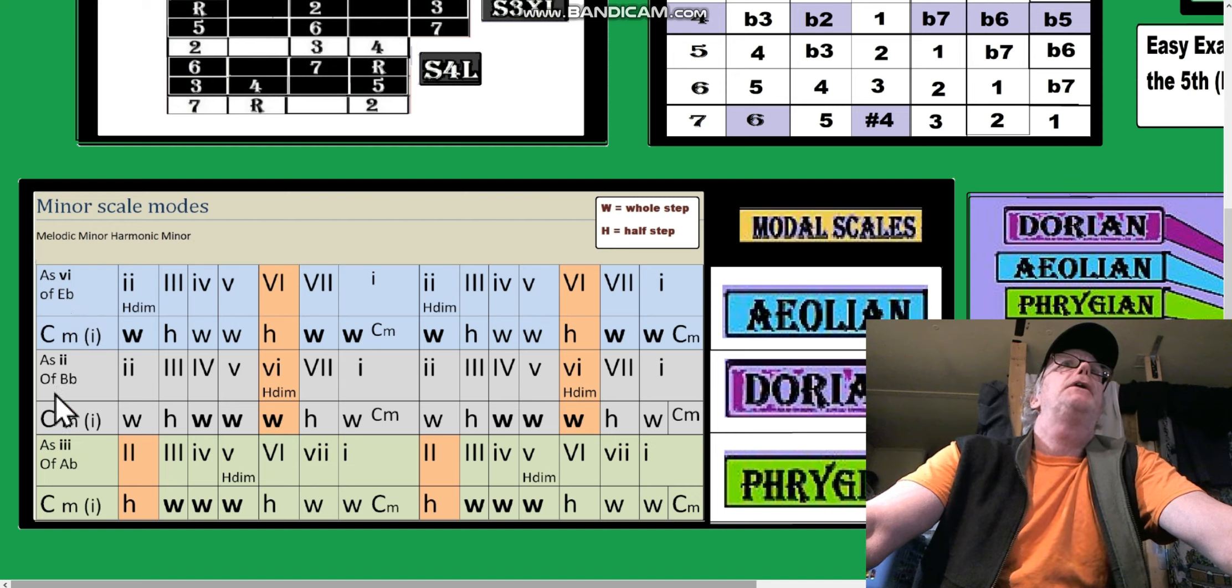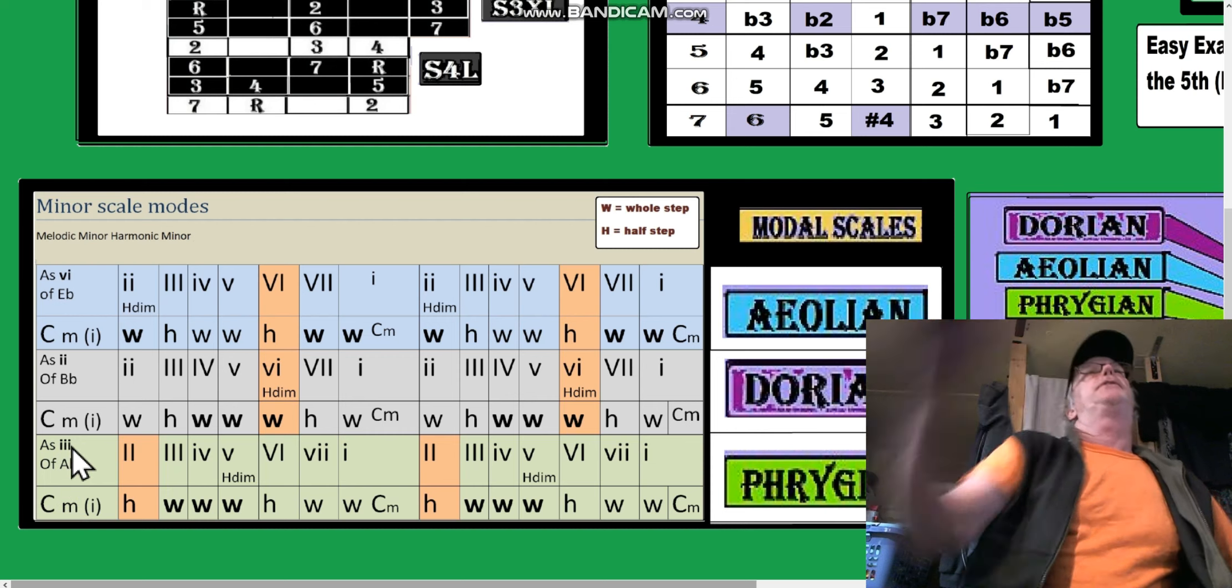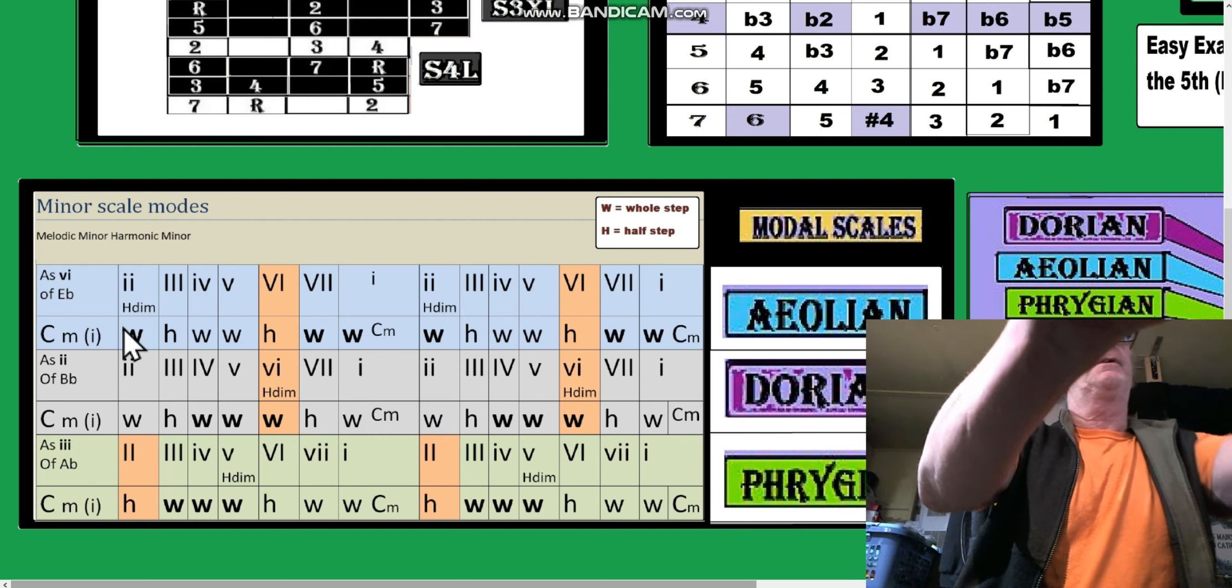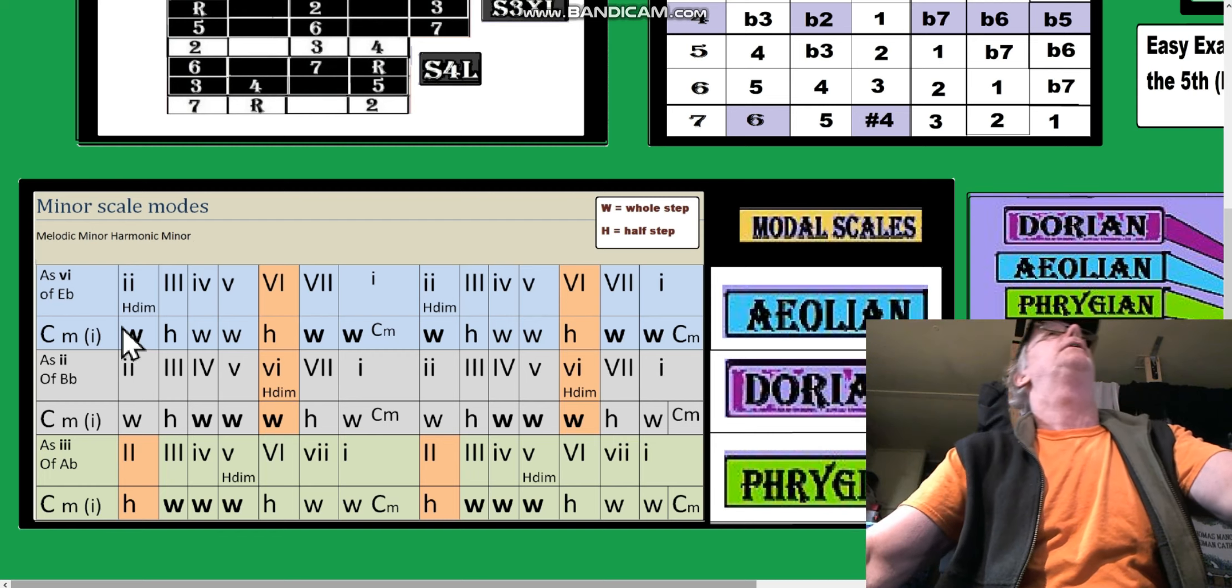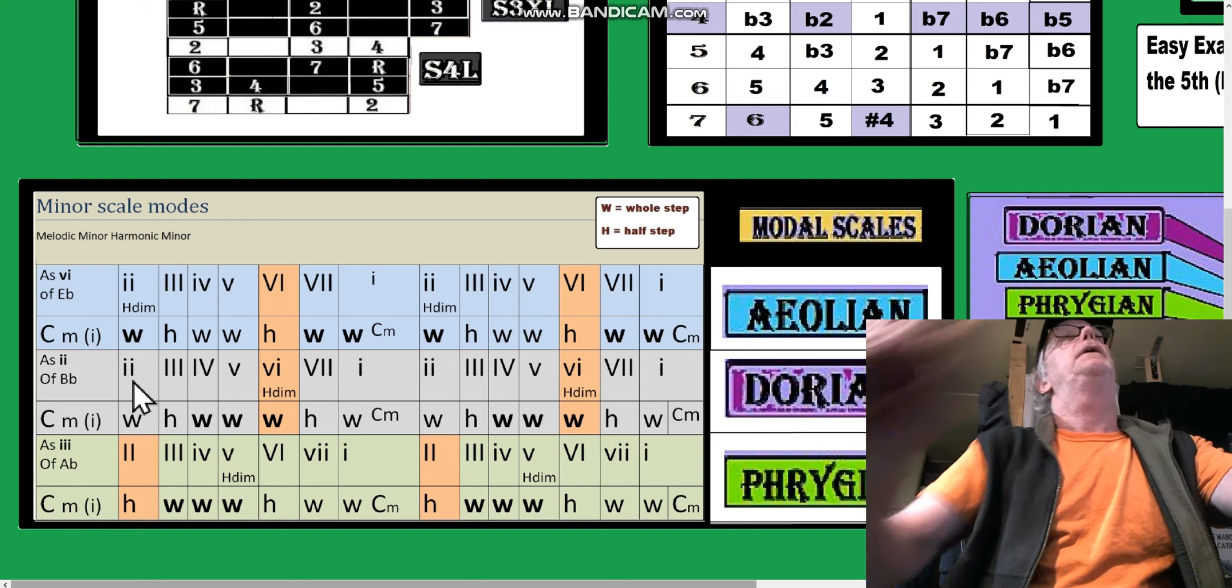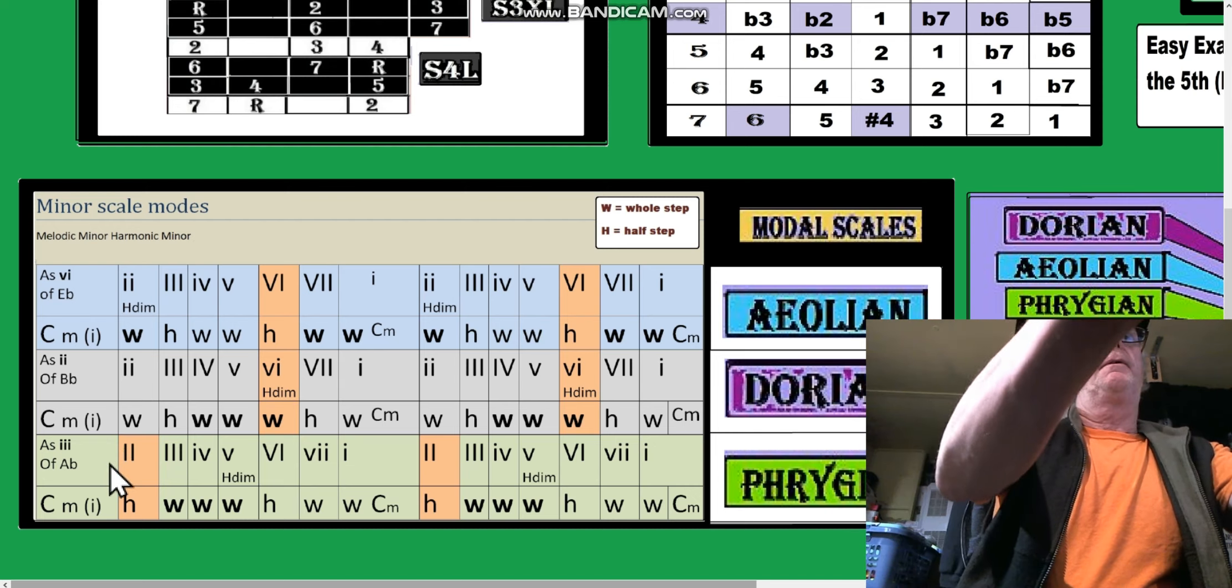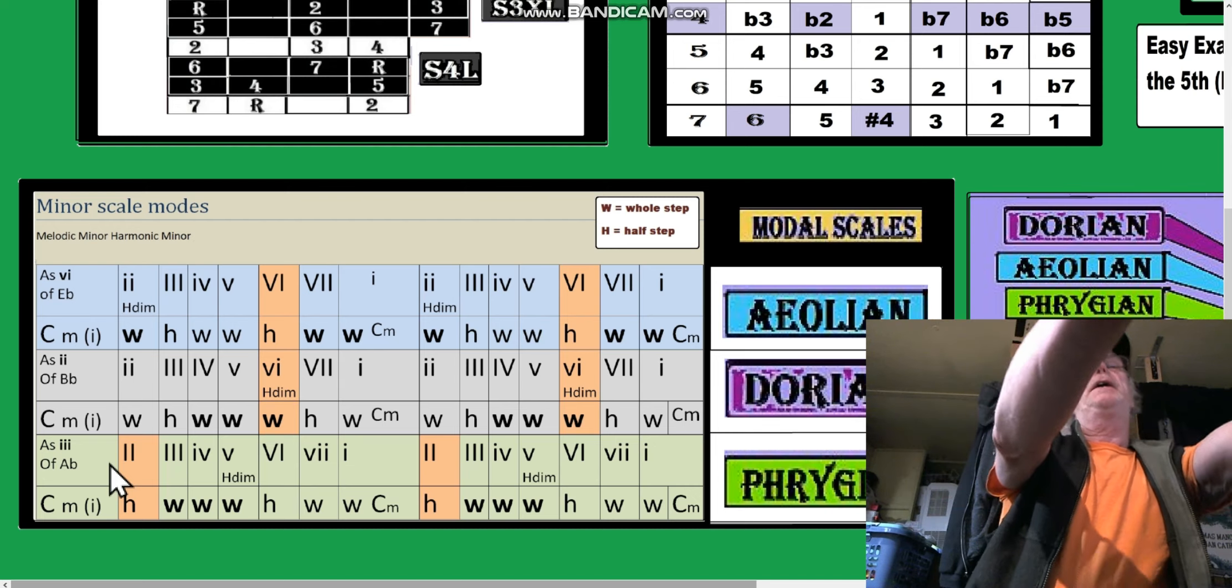We got C minor as the second of B flat, we got C minor as the third of A flat. So C minor as the sixth of E flat is this... and then C minor as the third of A flat is... and that's the Phrygian.